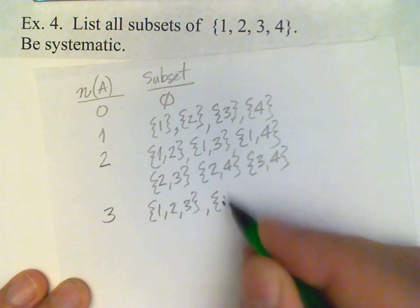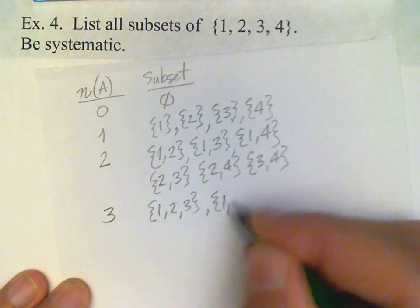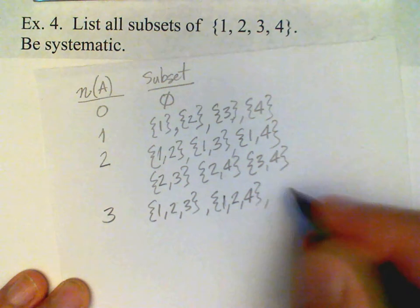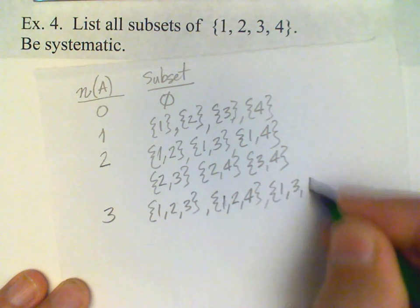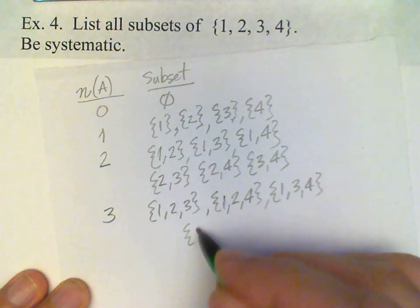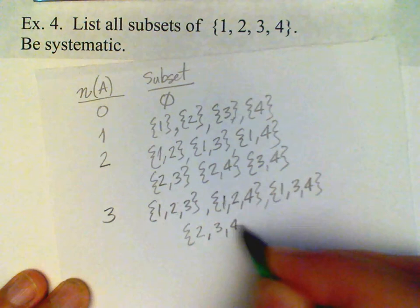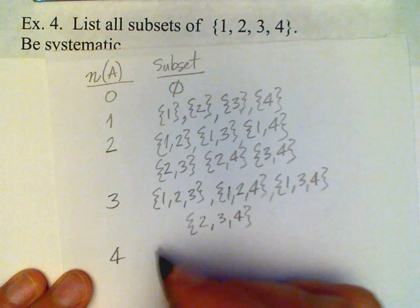{1, 2, 4}, that leaves out 3, {1, 3, 4}, that leaves out 2, and {2, 3, 4} leaves out 1. And finally, a four element subset consists of the set itself.